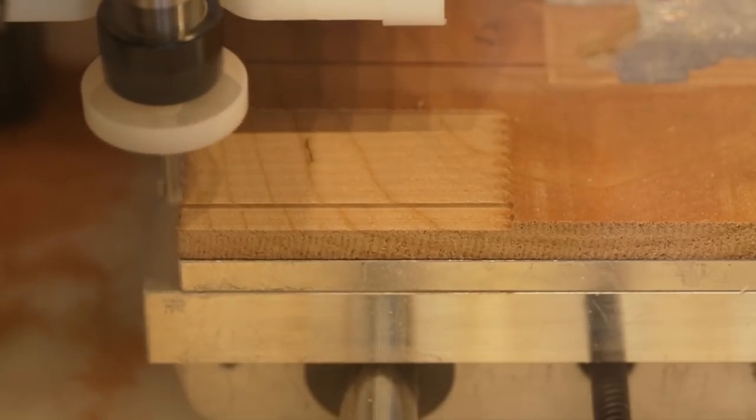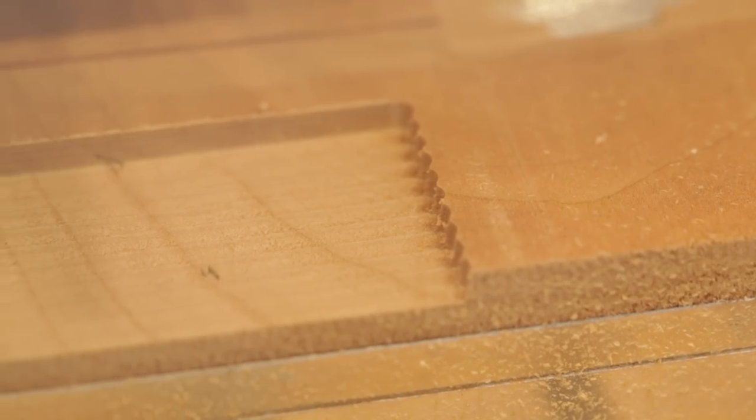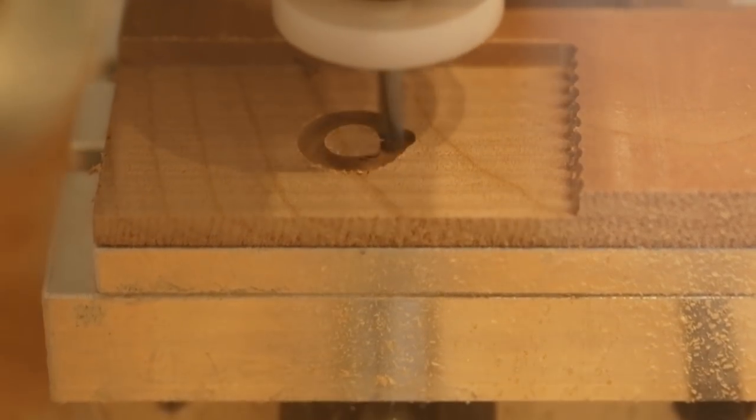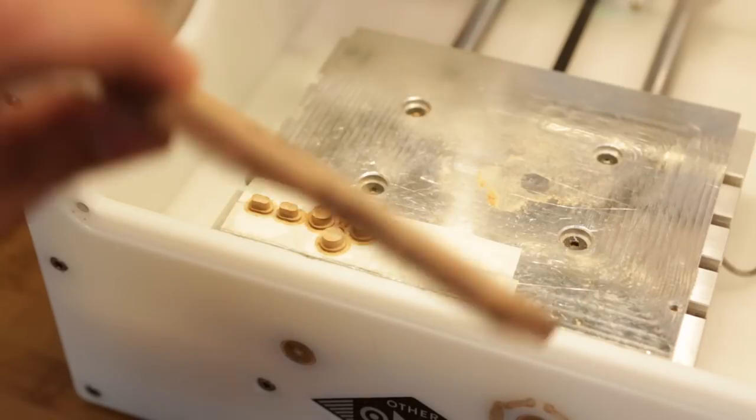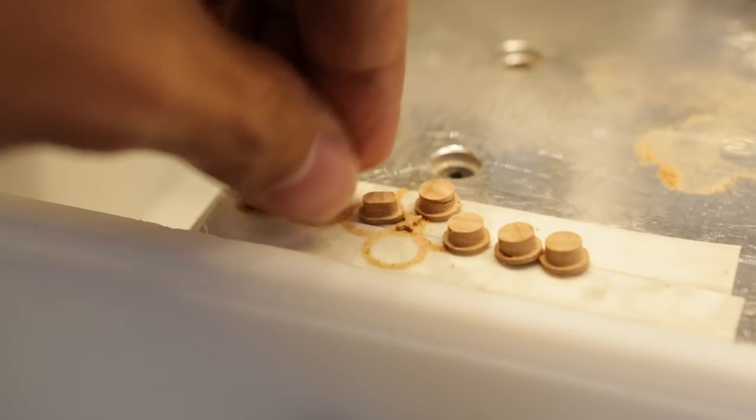I faced the stock and used two contour operations to cut out the buttons. I used a 1⁄8 inch bit for the inner contour and a 1⁄16 inch for the final cutout. They were pretty easy to remove from the spoil board, I just used my fingers because they're actually pretty small.